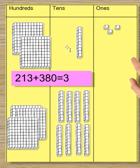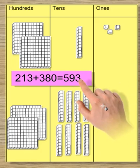Then we have eight tens plus one ten makes nine tens. Then we have three hundreds plus two hundreds makes five hundreds. So we have our finishing amount of 593.